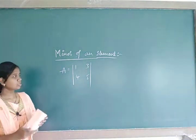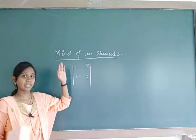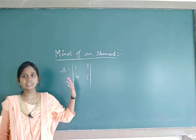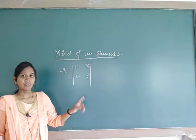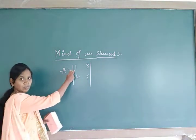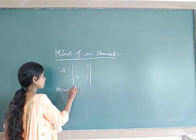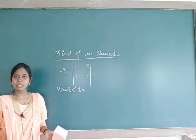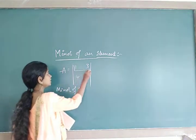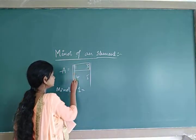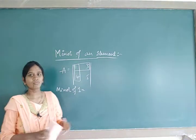Consider this determinant — its order is 2×2. The minor of a 2×2 is obviously a 1×1. If I ask: what is the minor of 1? Wherever 1 is present, delete that row and that column. The 1 is present in the first row and first column. After deleting, the minor of 1 is 5.